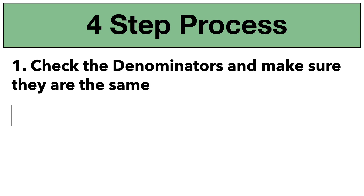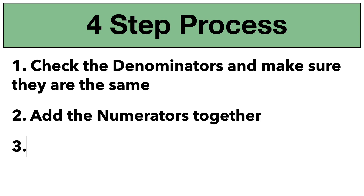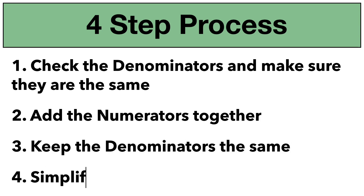The second step is that you're going to add the numerators together. The third step is you're going to keep the denominator the same. And fourth, you're going to simplify the fraction if you need to — that's only if it's not fully simplified already.